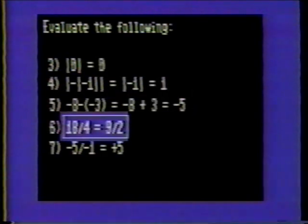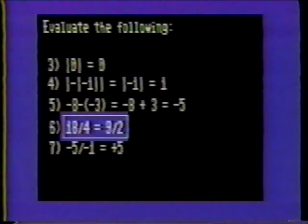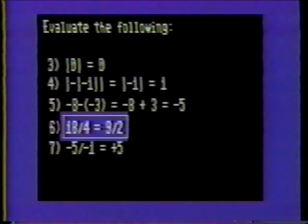Number six: 18 divided by 4. Notice that both 18 and 4 are evenly divisible by 2. 18 divided by 2 is 9, and 4 divided by 2 is 2. The solution is 9 halves.